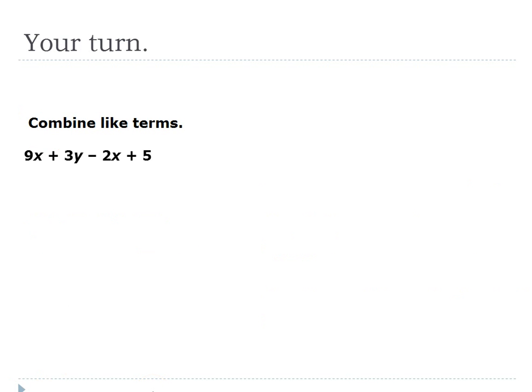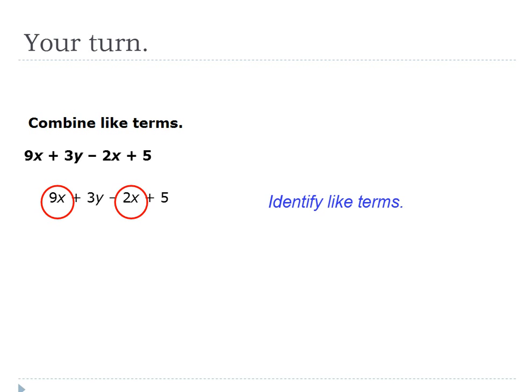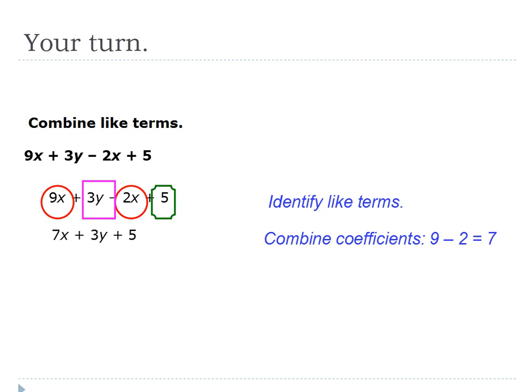This one's for you: 9X plus 3Y minus 2X plus 5. Go ahead and find your like terms and write this in simplest form. X's and Y's do not combine because X will be one value and Y will be another — they are not like terms. Identify like terms: 9X goes with minus 2X; 3Y is by itself; 5 is by itself. Combining 9X minus 2X: nine minus two is seven, giving 7X. Bring down plus 3Y plus 5. The simplest form is 7X plus 3Y plus 5.